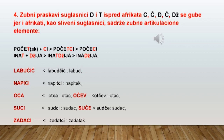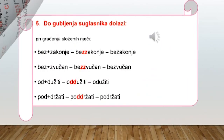Zubni suglasnici D i T ispred afrikata C, Č, Ć i Đ se gube jer ovi glasovi u sebi sadrže zubne artikulacione elemente suglasnika D i T. Tako su nastale riječi počeci, nađija, zatim padežni oblik genitiva od imenice otac glasi oca, prisvojni pridjev glasi očev, zadaci od imenice zadatak.